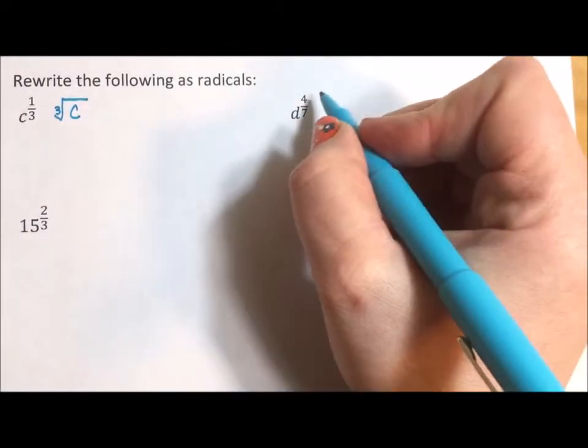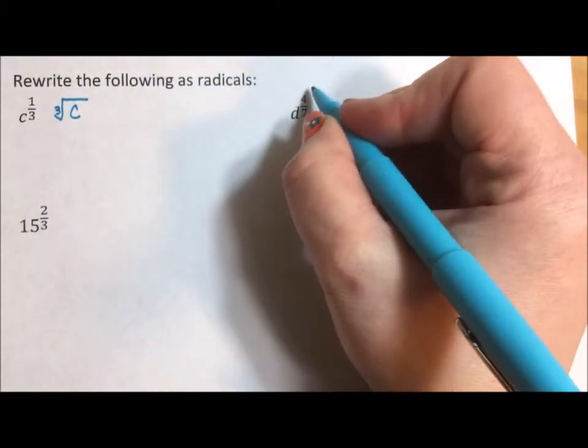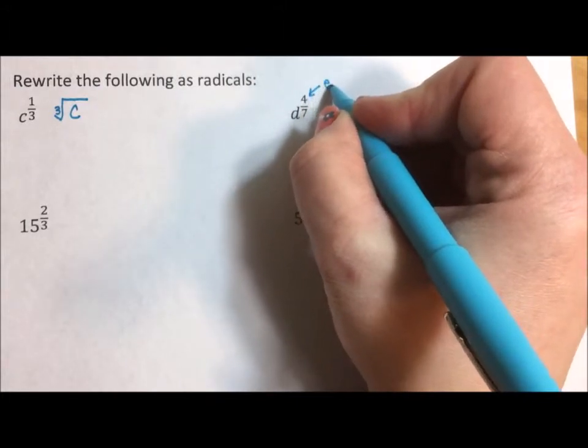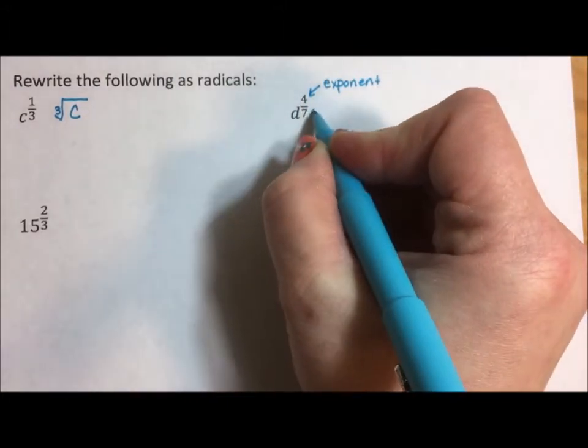Now when you have both the numerator and the denominator, we had a one here. We don't really worry about ones as much. That top is your exponent. The denominator is your radical.